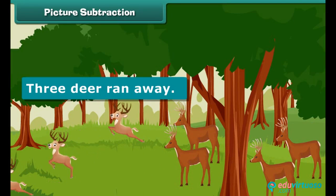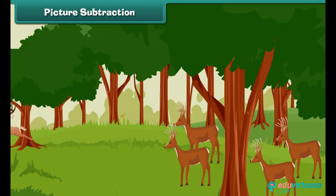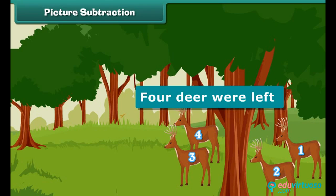Reena saw seven deer in the zoo. Three ran away. How many are left? One, two, three, four — four deer were left.